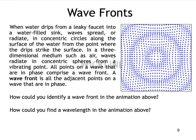It's easy to identify wavefronts because you can find these areas of condensation in the medium. The wavelength will just be the distance in meters between two adjacent wavefronts. Here's one wavefront and there's another, so the distance in meters between these two would be the wavelength.